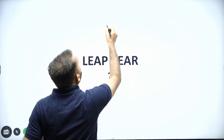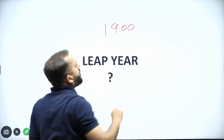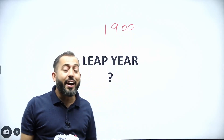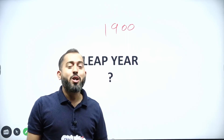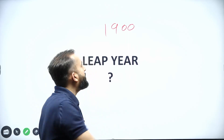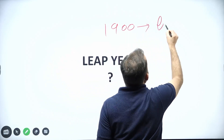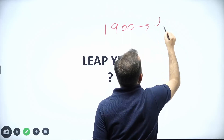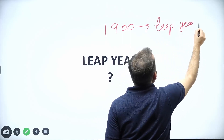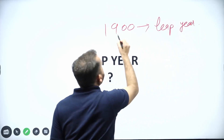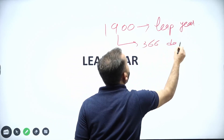Now, if I ask you what kind of year 1900 was, it's possible that a lot of people will say it was a leap year — that it should have 366 days in it.